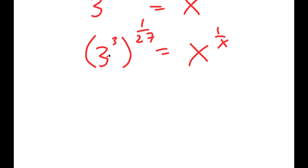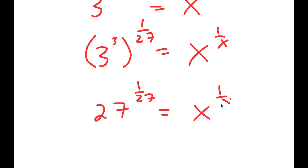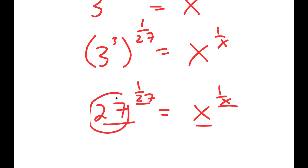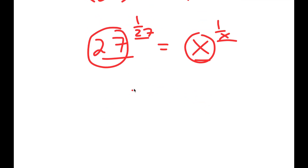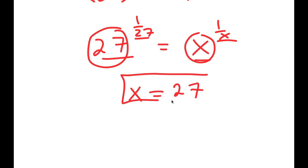Now, 3 to the power of 3 is 27. So I get 27 to the power of 1 over 27 is equal to x to the power of 1 over x. Notice how these two have the same form, meaning x is 27. So this is my solution to this equation.